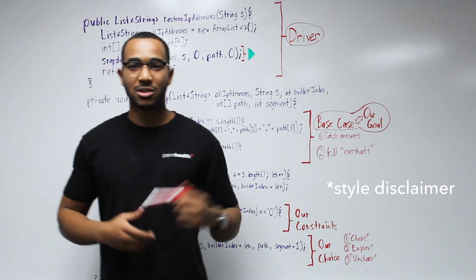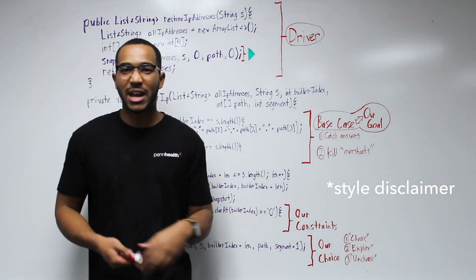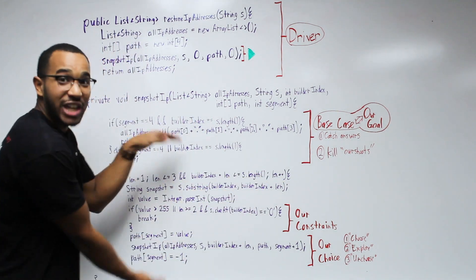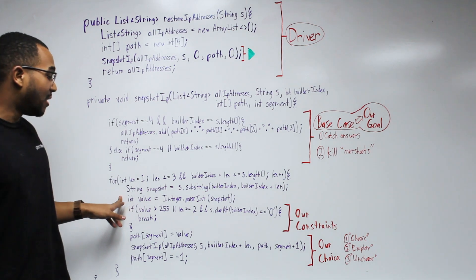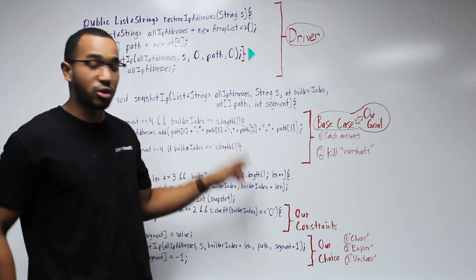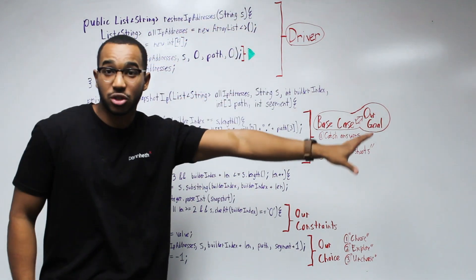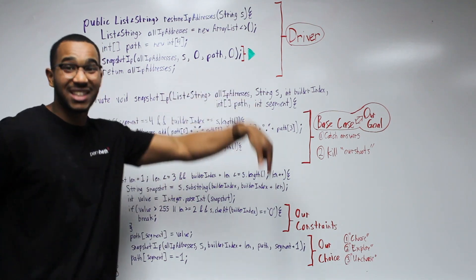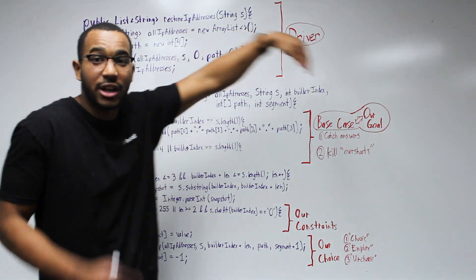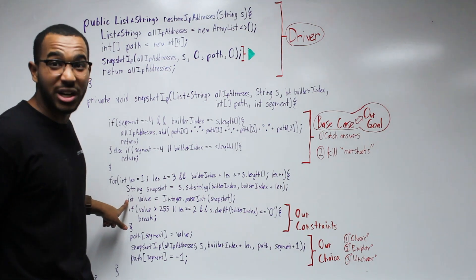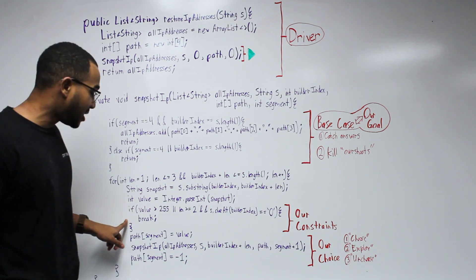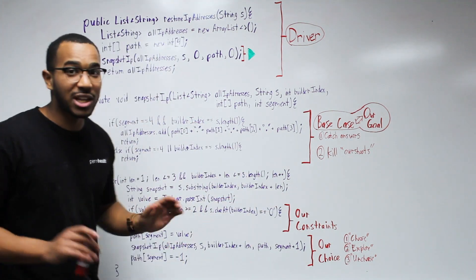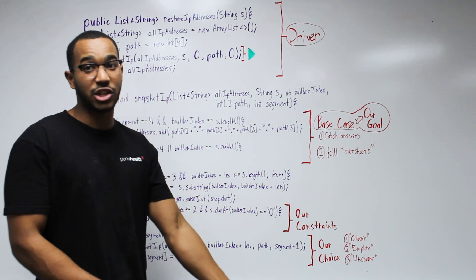This is our base case, which catches all possibilities generated below. We iterate from length one to length three, ensuring we haven't overshot the string — the build index plus length must not exceed the string length. We take our snapshot: a substring from the build index to the build index plus length. We convert it to an integer and check our constraints: is this greater than 255, or does it have a leading zero? If either is true, we break, because that violates our constraints. Don't explore that path.